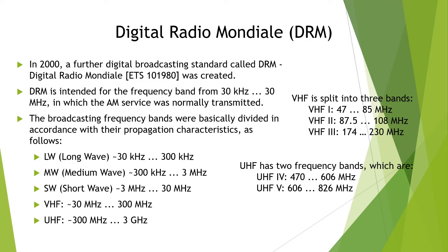For example, Long Wave (LW) is from 30 kHz to 300 kHz; Medium Wave is 300 kHz to 3 megahertz; Short Wave is 3 megahertz to 30 megahertz; VHF is 30 megahertz to 300 megahertz; and UHF is 300 megahertz to 3 gigahertz. VHF is split into three bands: VHF 1 (47–85 MHz), VHF 2 (87.5–108 MHz), and VHF 3 (174–230 MHz). UHF has Band 4 and Band 5.